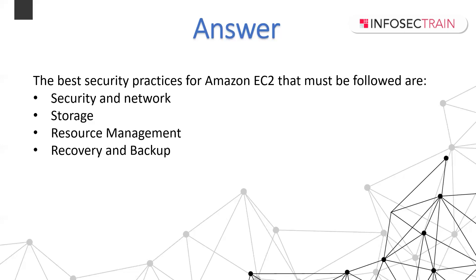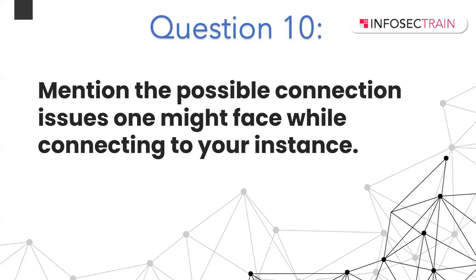For storage best practices: understand root device type implications for persistence, backup, and recovery; use separate Amazon EBS volumes for the OS and data; use instance store volumes for temporary data; and always encrypt EBS volumes and snapshots. For resource management: use instance metadata and custom resource tags to track AWS resources; view EC2 limits; and use Trusted Advisor to inspect your environment and identify cost-saving opportunities.